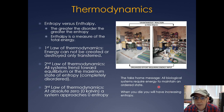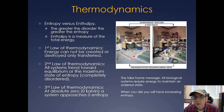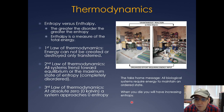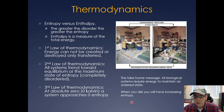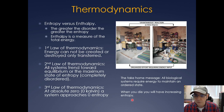The third law of thermodynamics states that at absolute zero (0 Kelvin), a system approaches zero entropy, which is completely ordered. The take-home message is that all biological systems require energy to maintain an ordered state. When you die, you have increasing entropy — you become increasingly disordered as your body decomposes, and without energy to reorder it, you just have increasing entropy.